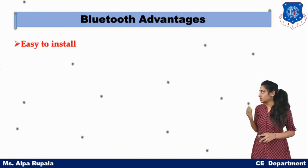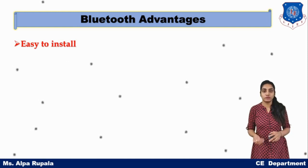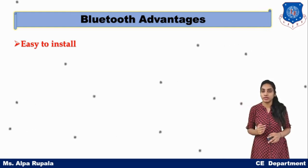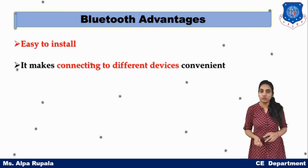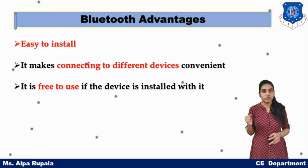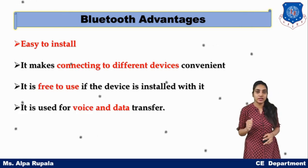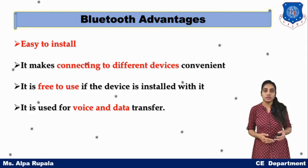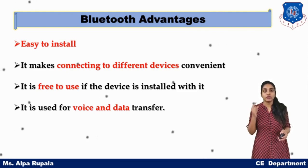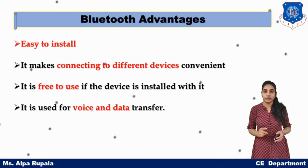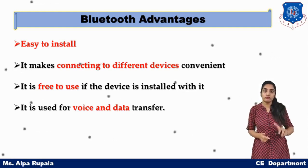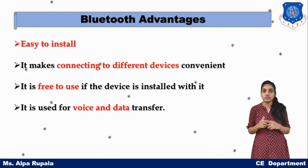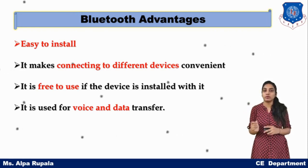Bluetooth is easy to install — on a mobile phone, we just click a single button to activate or deactivate it. Connection to different devices is very convenient. It is free to use, and it can transfer both voice and data. For example, a Bluetooth headset transfers voice signals to your mobile phone, and your mobile phone transfers signals to the antenna — so voice and data are both handled.